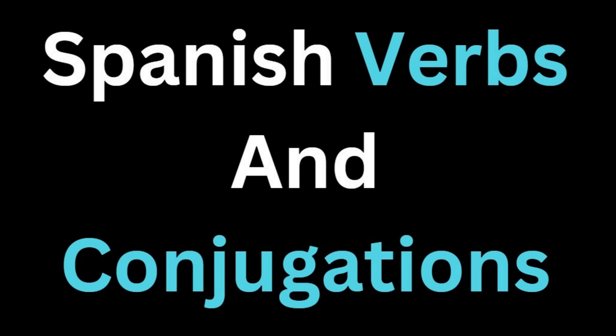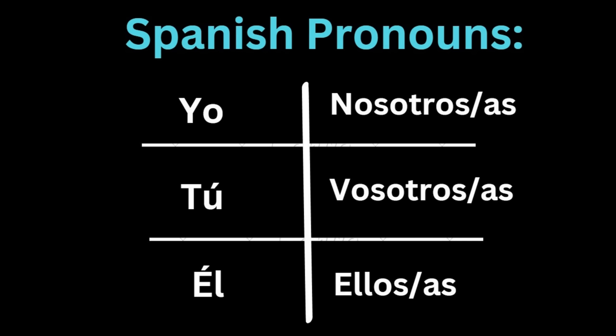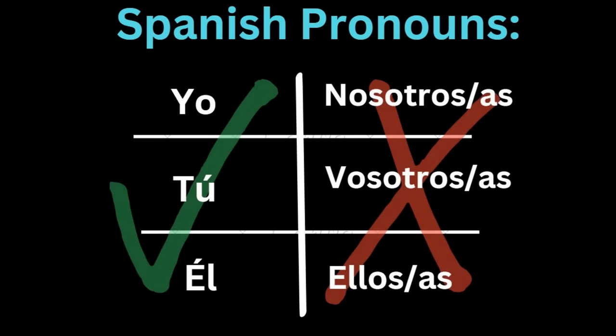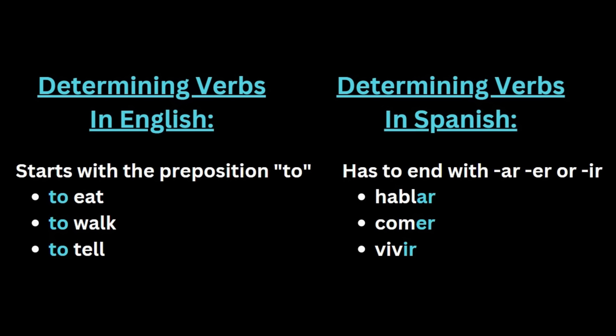Spanish has a lot of verbs and a lot of conjugation for those verbs. This is the primary fundamental of Spanish — the first system where you'll need to think in terms of translation rather than memorization. Conjugation means you're modifying a verb so it fits the pronoun you're using. In Spanish, to determine if a word is a verb, it has to end in ar, er, or ir — like hablar, comer, and vivir.